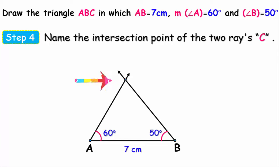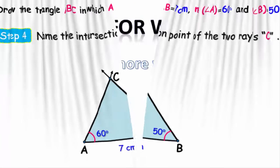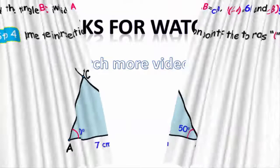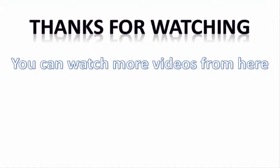We arrive at our last step: naming the intersection point of the two rays as point C. Finally, we have obtained triangle ABC with side length AB equals seven centimeters, measure of angle A equals 60 degrees, and measure of angle B equals 50 degrees. I hope the explanation was clear — thank you for watching and see you next time.